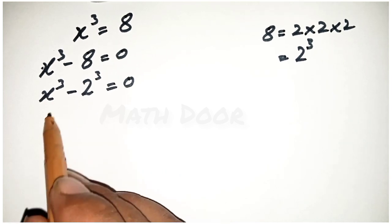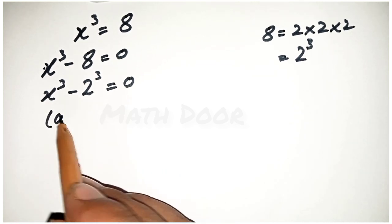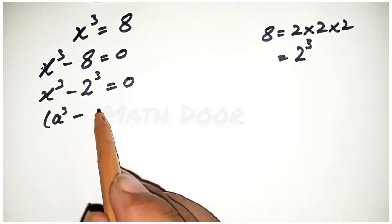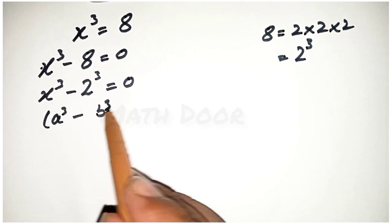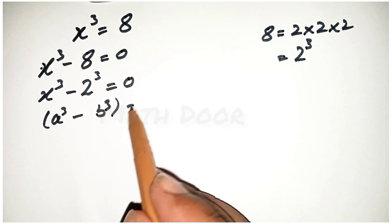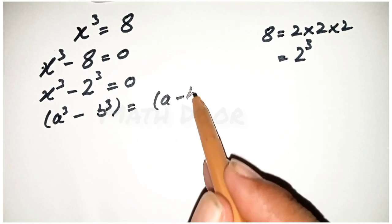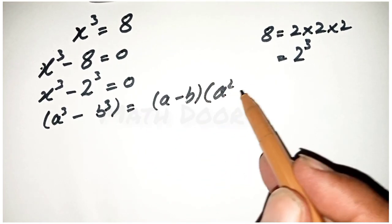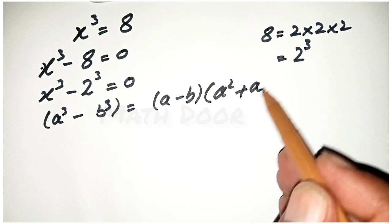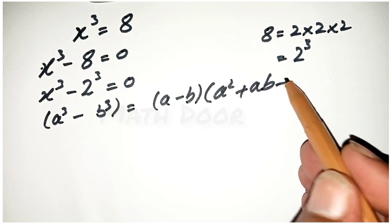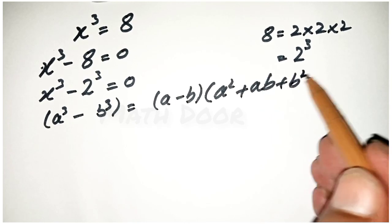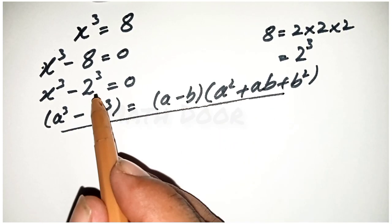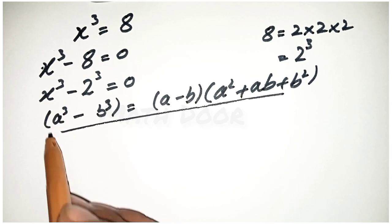Now, we have a formula: a power 3 minus b power 3 is equal to a minus b, times a square plus a b plus b square.